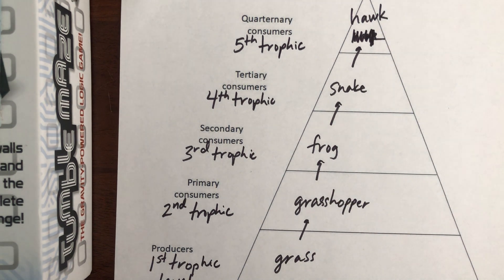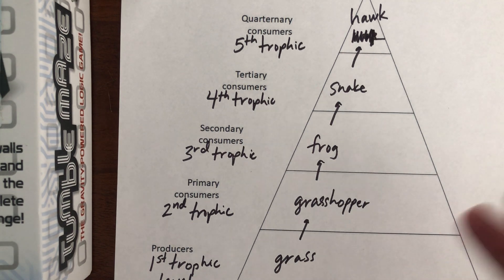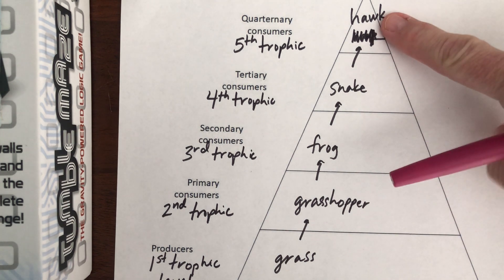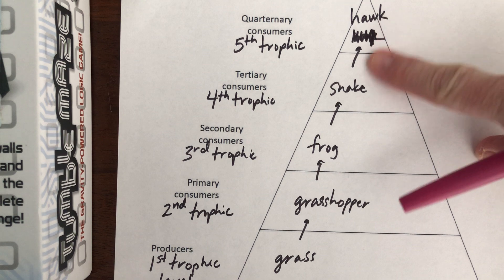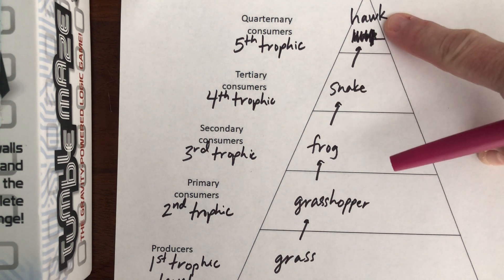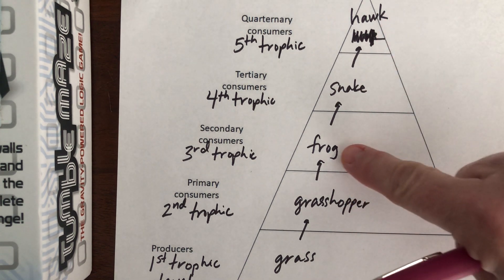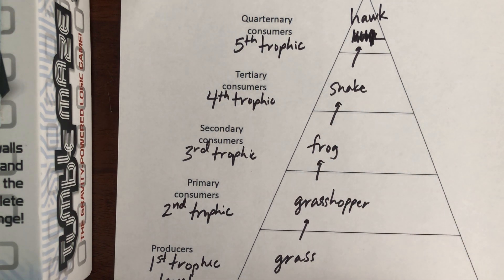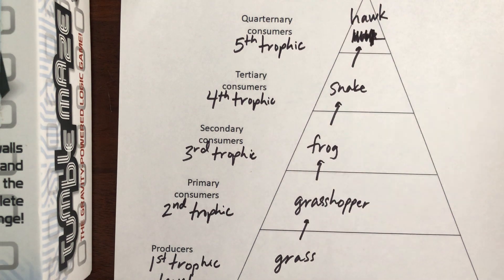Some of you will ask: what's the difference between a food chain and a food web? A food web is just multiple food chains put together. Obviously there's probably another predator eating the snake besides just the hawk, and the frog isn't just going to eat a grasshopper — it's going to eat something else. So a food web is just a more intricate food chain. A food chain is a single line of energy transfers — that's important to remember.